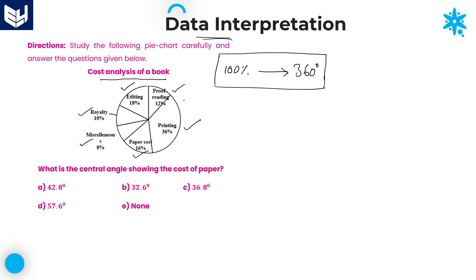All these values are expenditures of publishing a book. Whenever we are publishing a book, all these come into the picture: proofreading, editing, printing, royalty, miscellaneous expenditures, and paper cost. That is the entire information about this particular pie chart. Based on that, we need to solve the questions accordingly.